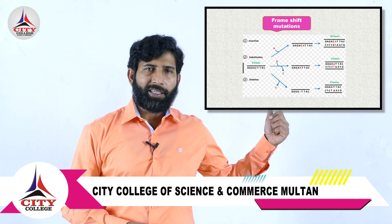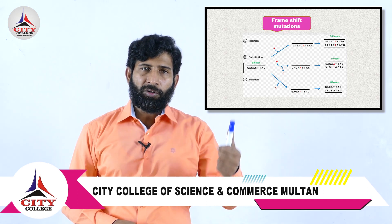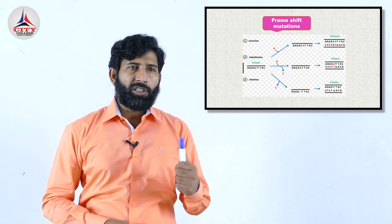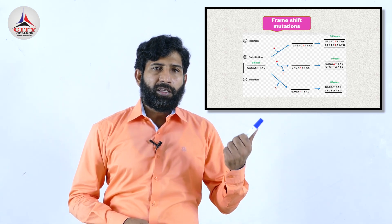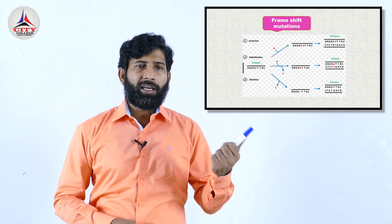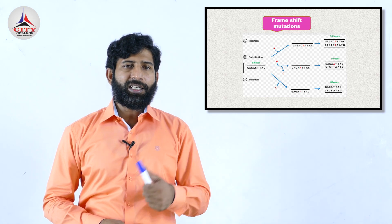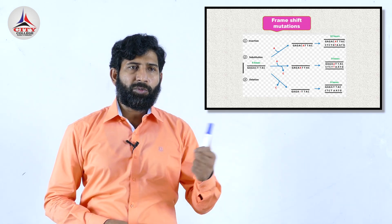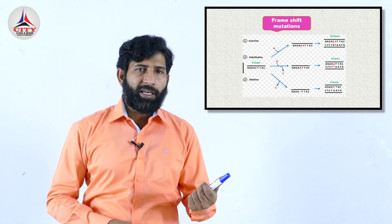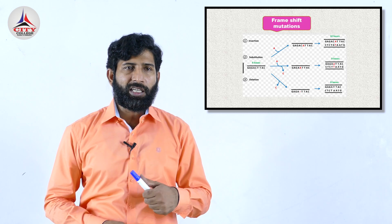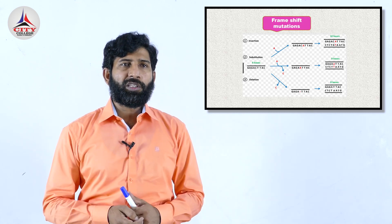The diagram also shows insertion: when one adenine nucleotide is added, the total becomes 10 bases. Substitution and deletion processes are also shown. If cytosine is deleted, 8 nucleotide bases remain. In substitution, if adenine is replaced by cytosine, the number of nucleotides stays the same but a substitution occurs. This is an overview of point mutations. Thank you very much.